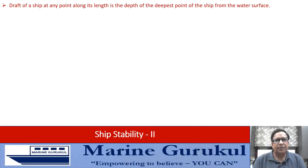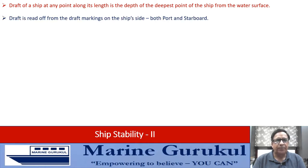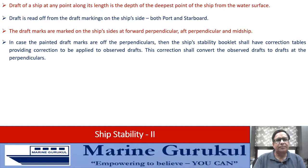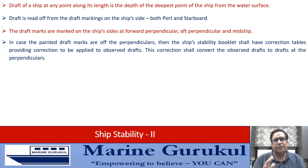The draft of a ship at any point along its length is the depth of the deepest point of the ship from the water surface. Draft is read off from the draft markings on the ship sides, both port and starboard. Draft marks are painted on the ship side at the forward perpendicular, after perpendicular, and midships. If the painted draft marks are not at the perpendicular, the ship stability booklet shall have a correction table to convert the observed draft to the drafts at the perpendiculars.